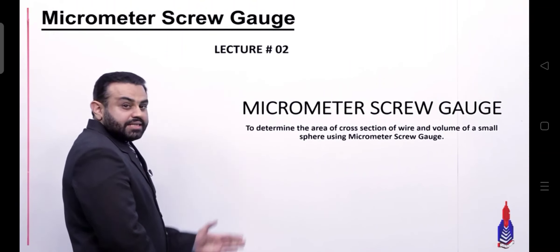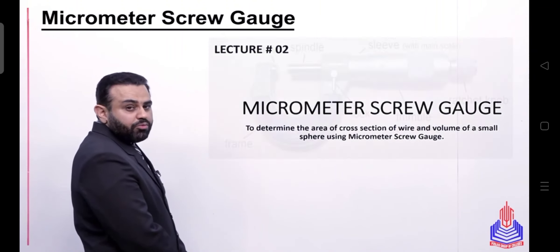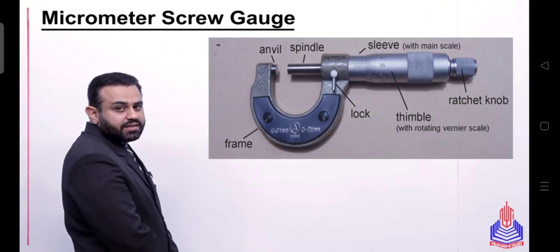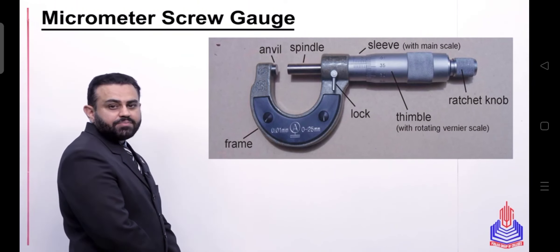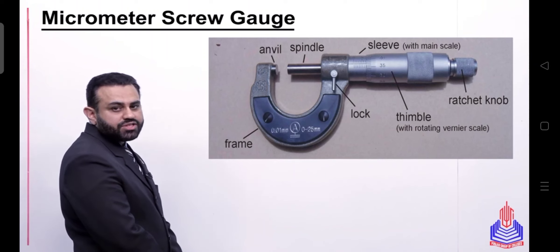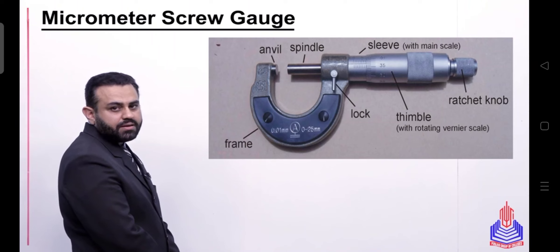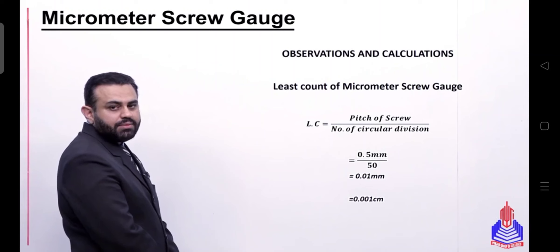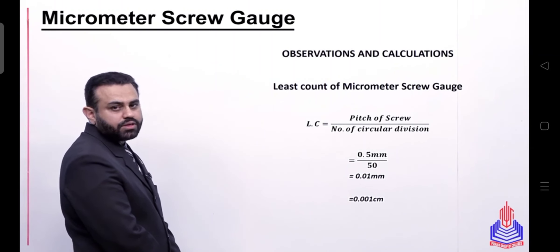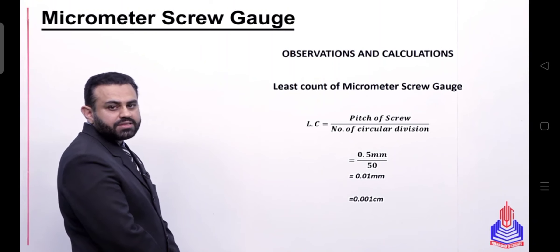As you can see here, you can see the micrometer screw gauge and its important body parts. We will follow the same pattern of observations and calculations that we have used previously, and we will also talk about zero error in the micrometer screw gauge.